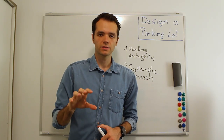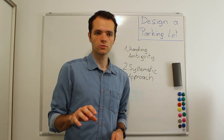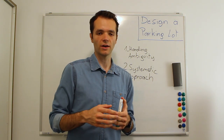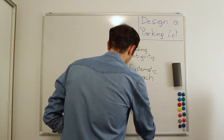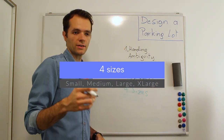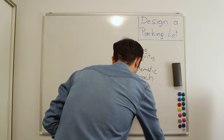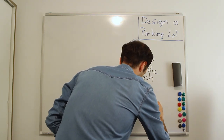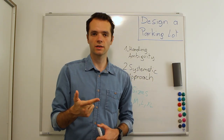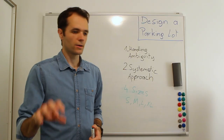Now let's assume the interviewer has pointed you in the right direction and you've clarified a lot of questions. Let's assume he wants you to design a system with four different sizes of parking spots: small, medium, large, and XL. You could imagine small for motorcycles, medium for small cars, large for big cars, and XL for buses.